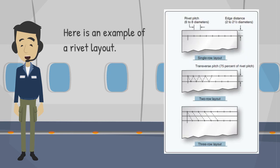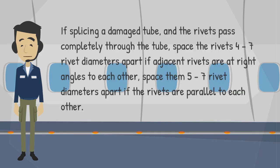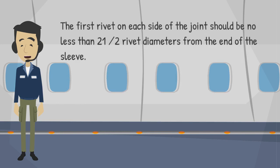Here is an example of a rivet layout. If splicing a damaged tube and the rivets pass completely through the tube, space the rivets 4 to 7 rivet diameters apart if adjacent rivets are at right angles to each other, or 5 to 7 rivet diameters apart if the rivets are parallel to each other. The first rivet on each side of the joint should be no less than 2 and 1/2 rivet diameters from the end of the sleeve.